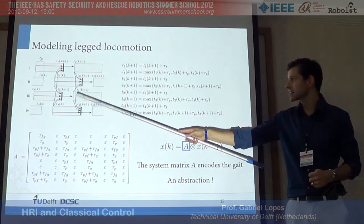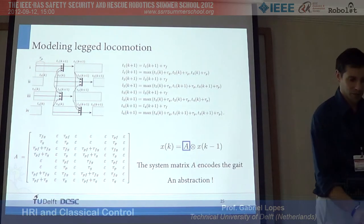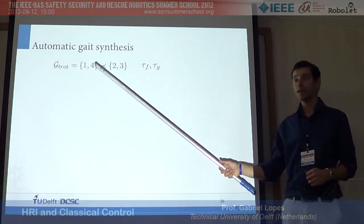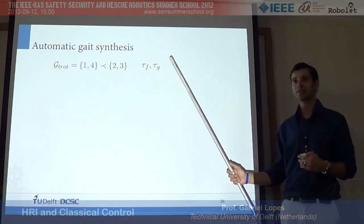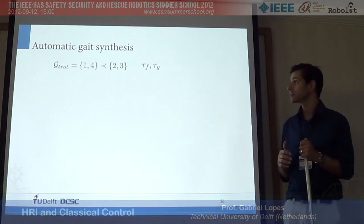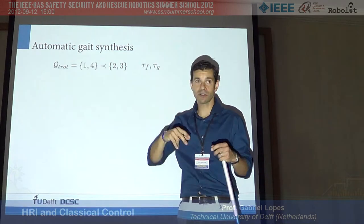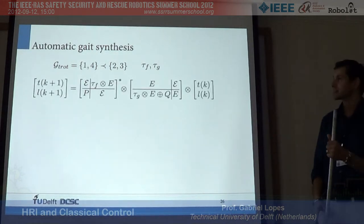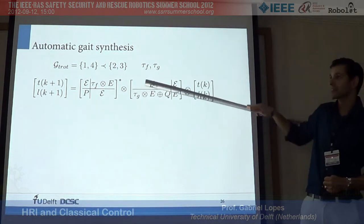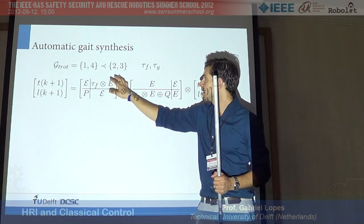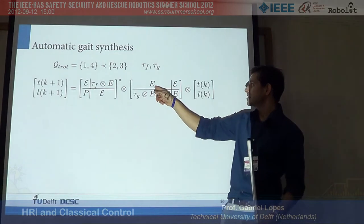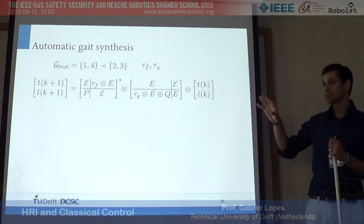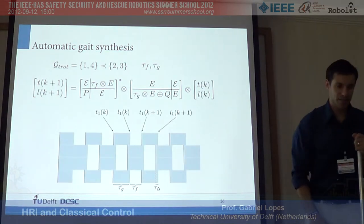Do we need to synthesize all of this by hand? It turns out you can make your life easier. Give me your preferred flight time, swing time, and stance time and we can synthesize the motion controller automatically. These numbers indicate which legs recirculate together, and from that specification you can automatically synthesize models. You plug in the numbers, they go into matrices P and Q, where capital E is the identity matrix in the max-plus world. You synthesize the A matrix, plug it in, simulate it, and immediately get your desired behavior.